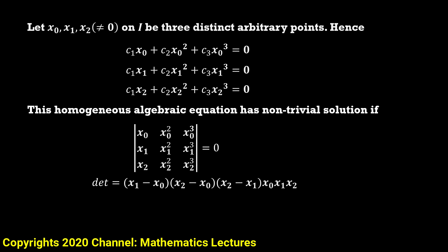If we further solve this determinant, it equals (x₁ − x₀)(x₂ − x₀)(x₂ − x₁)·x₀·x₁·x₂. Now, we stated that x₀, x₁, and x₂ are all distinct points and none of them is zero. Therefore, all the difference factors are non-zero, and the product x₀·x₁·x₂ is also non-zero. This means the determinant can never be zero.